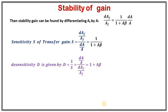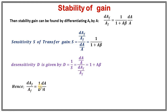D equals 1 plus Aβ. Therefore, the relation DAF/AF equals 1 over (1 plus Aβ) times DA/A can be rewritten as DAF/AF equals (1/D) times DA/A. For negative feedback, D is greater than 1, and thus the change in gain of the negative feedback amplifier is less than the change in gain of the internal amplifier. That is decided by this relation — larger the D, lower will be the gain variation.